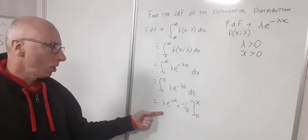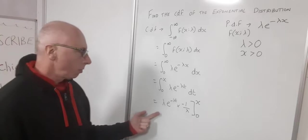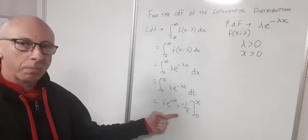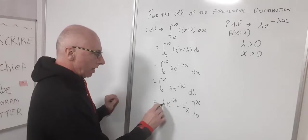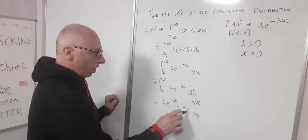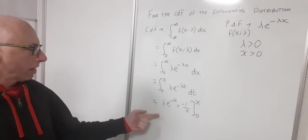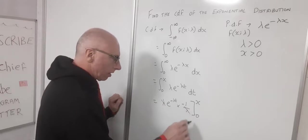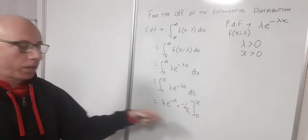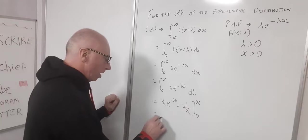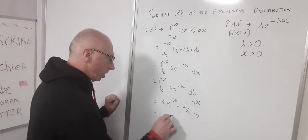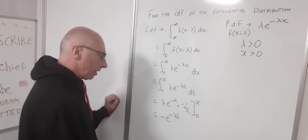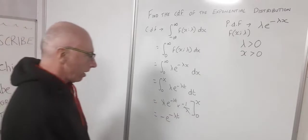Okay, now just simplify this off a little bit. So this lambda times minus one over lambda will just cancel out and give us minus one. So this will cancel out with this and just leave the minus one. So then we're left with negative e to the negative lambda t, and then zero to x.